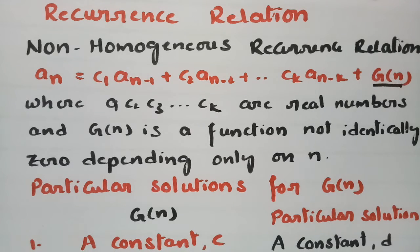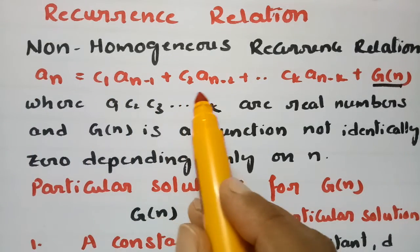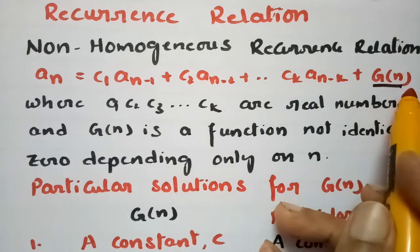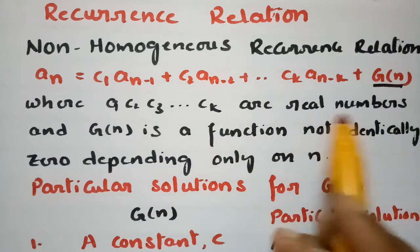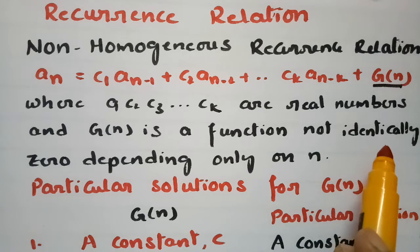In today's video I am going to explain what is a non-homogeneous recurrence relation, or inhomogeneous recurrence relation, related to discrete mathematics. Any equation of the form a_n = c1·a_{n-1} + c2·a_{n-2} + ... + ck·a_{n-k} + g(n), where c1, c2, ..., ck are real numbers and g(n) is a function not identically zero depending only on n.